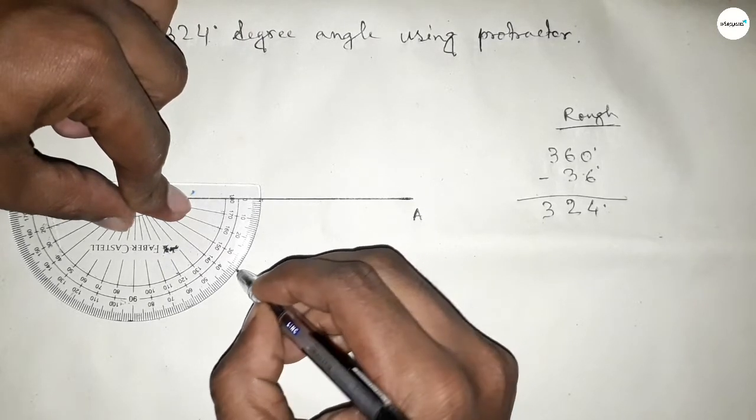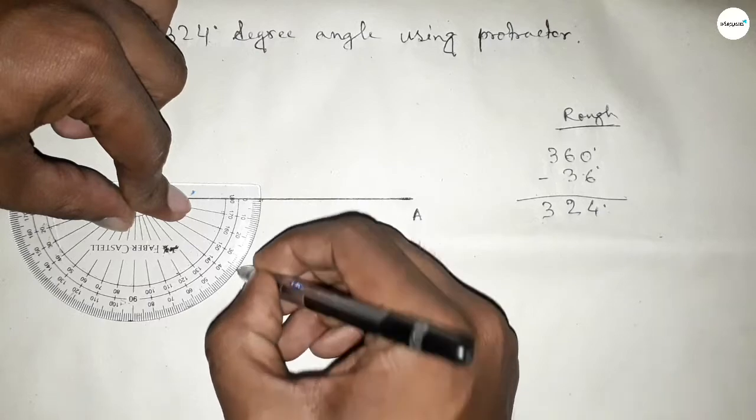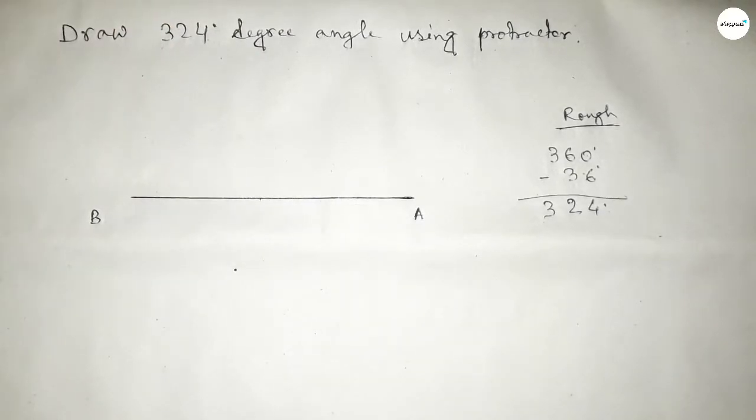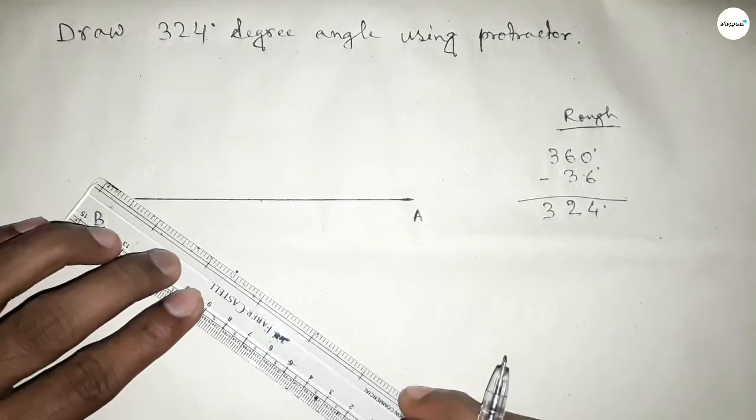So if we subtract 36 degrees from 360 degrees, then we can get a 324-degree angle.